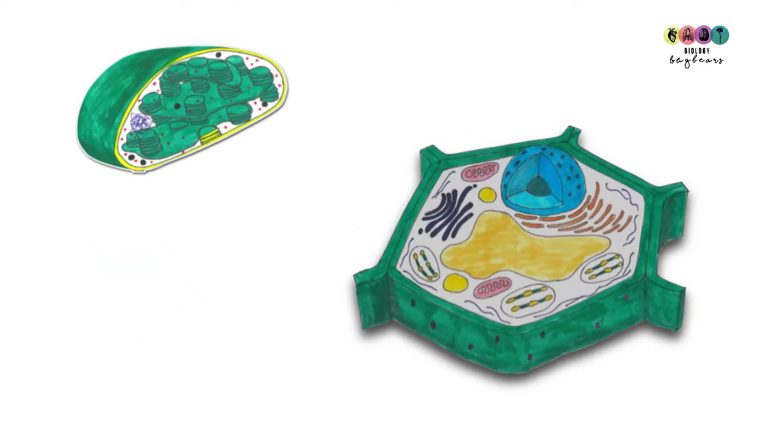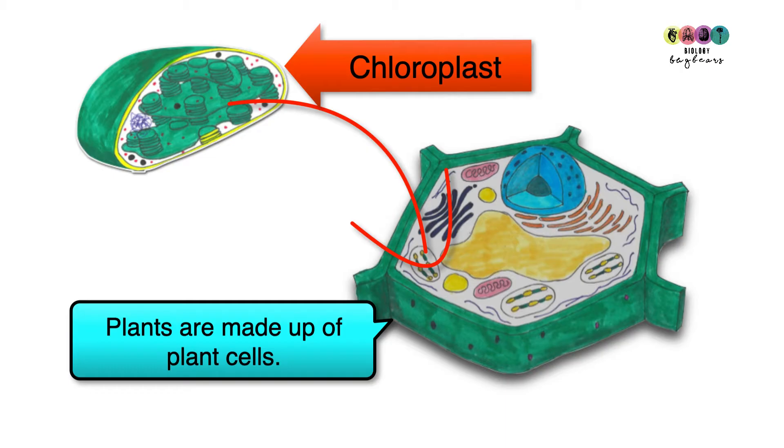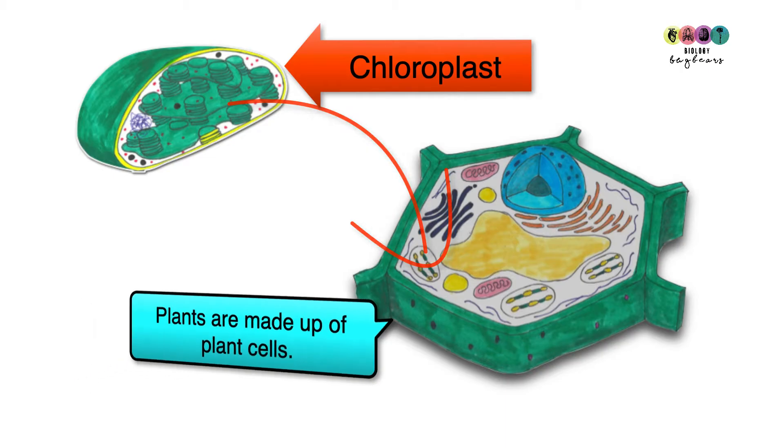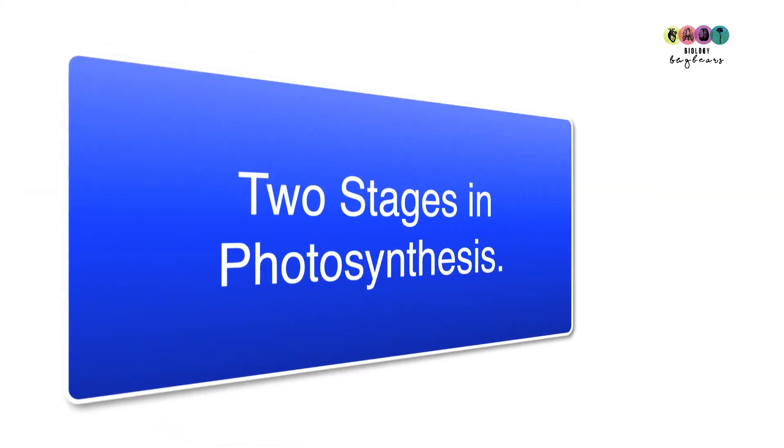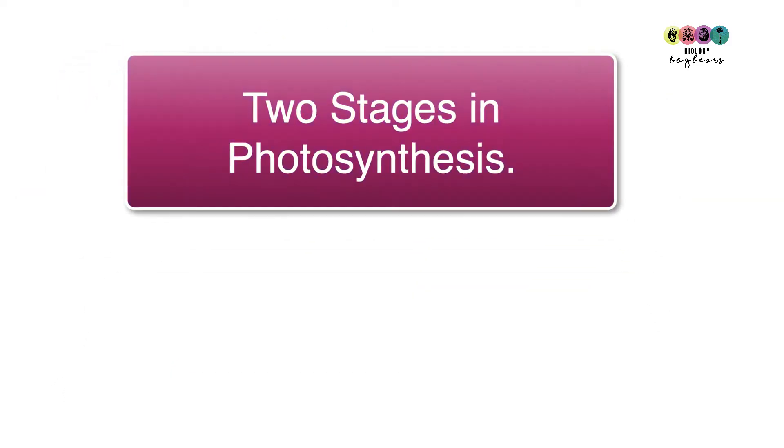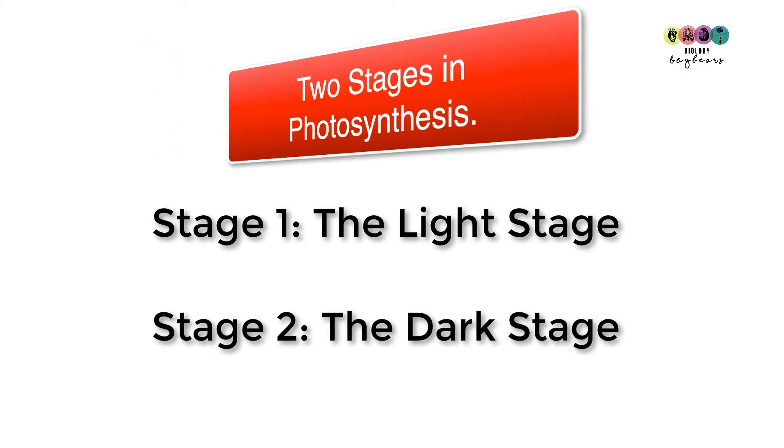Let's get even more specific as to where photosynthesis is taking place. All plants are made of plant cells and plant cells contain these organelles known as chloroplasts, so photosynthesis is taking place in the chloroplasts of plant cells. Photosynthesis is split into two stages: stage one is the light stage and stage two is the dark stage.